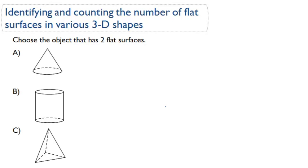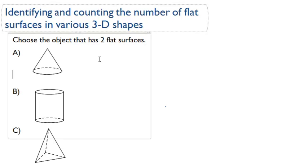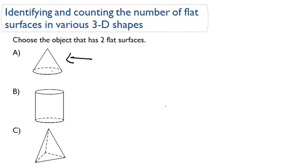Alright, identifying and counting the number of flat surfaces in various three-dimensional shapes. This question asks us to choose the object that has exactly two flat surfaces. If we look at this first answer choice, we have a cone here.